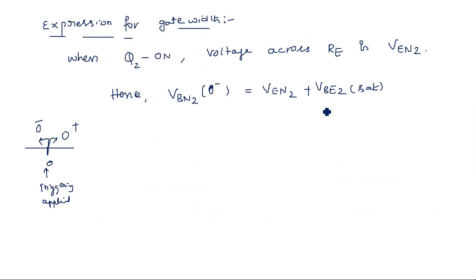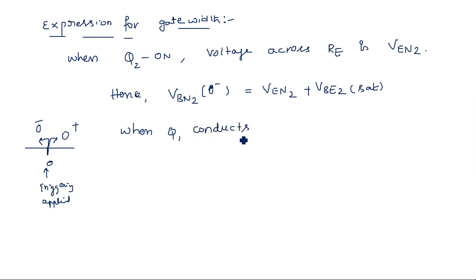When Q1 conducts — that is, after the triggering pulse is applied — the voltage at the base of Q2 drops.